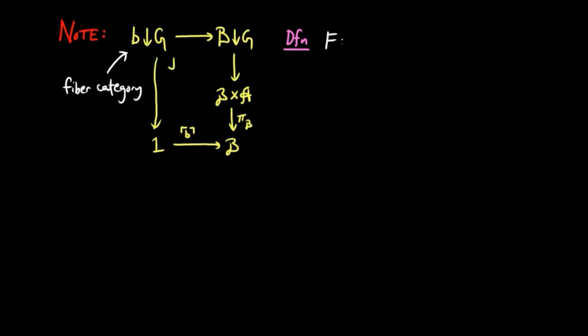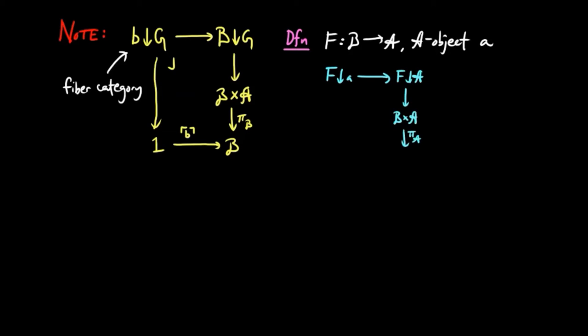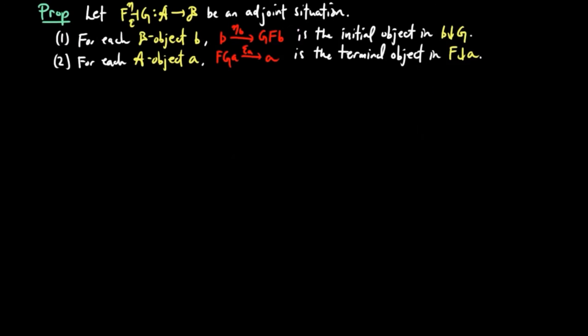So given a functor F and an A object A, we can define F over A as the fiber category of the analogous functor over that object A. You can verify that the objects and morphisms of this category are what you'd expect, similar to the category of B over G.